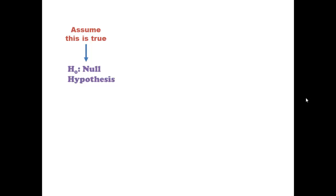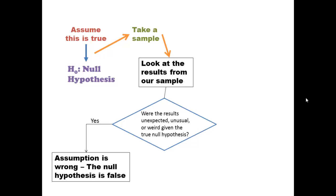We are assuming that the null hypothesis is true. Then we are taking a sample and seeing what our results are. If our results are really far from the results we expected if the null were true, that indicates that our assumption was wrong. The null hypothesis is not true, it's false.